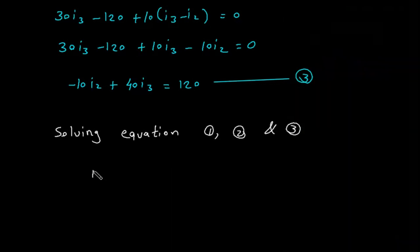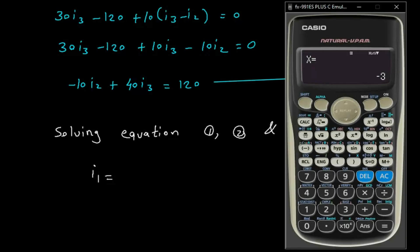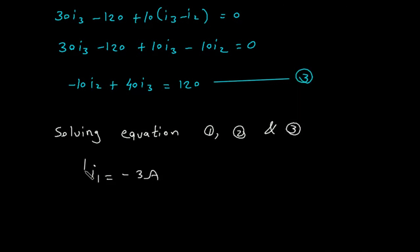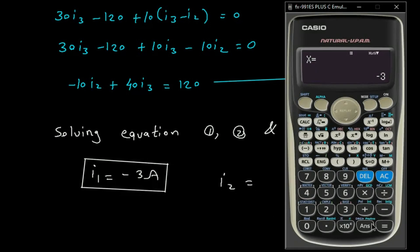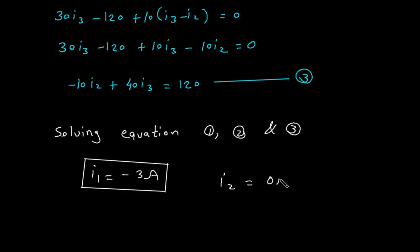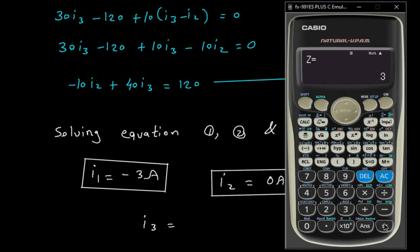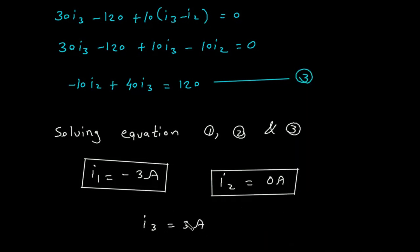Therefore, I1 equals minus 3 amperes, I2 equals 0 amperes, and I3 equals 3 amperes.